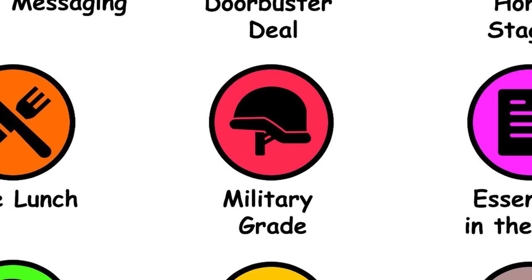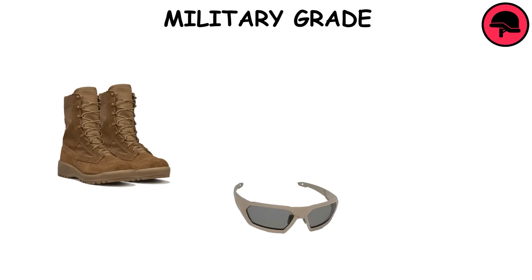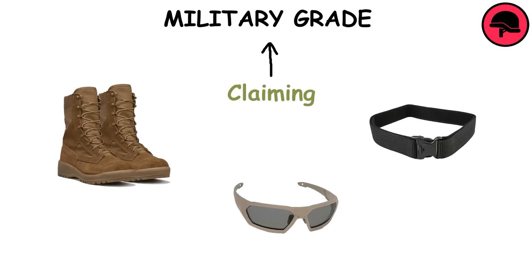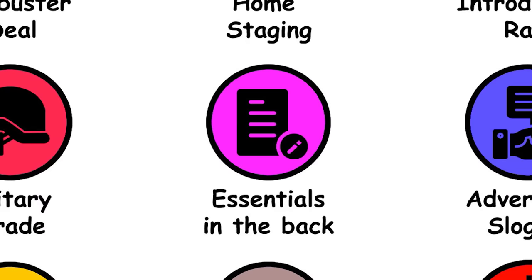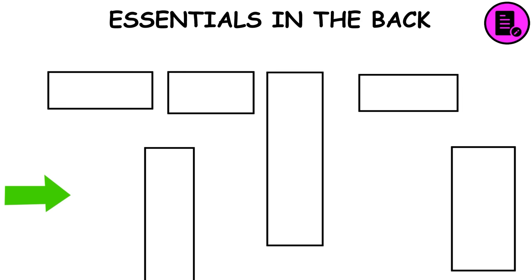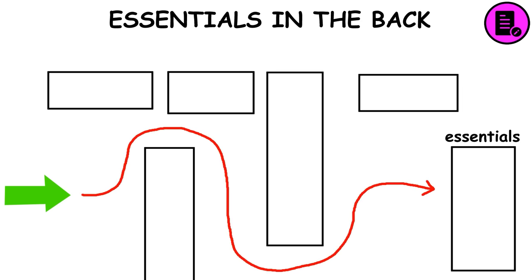Military Grade: A term used in marketing to make a product sound high quality by claiming it meets military standards. Essentials in the Back: Placing essential items at the back of the supermarket, far away from each other, so you have to look for them — making you come across other things you don't need but want to buy along the way.